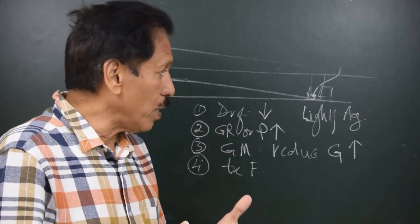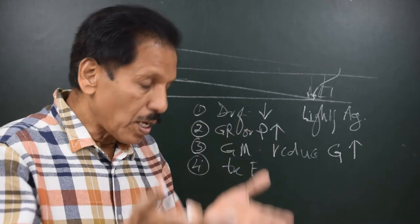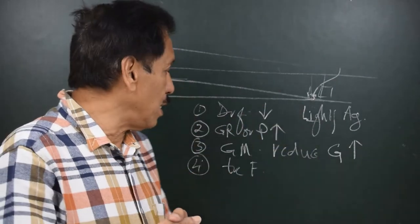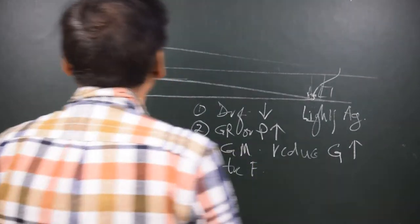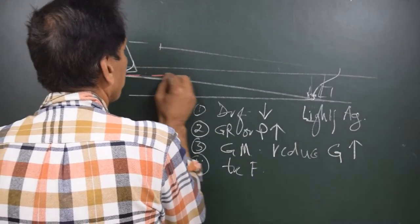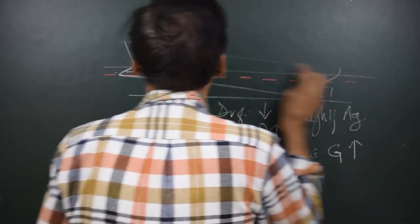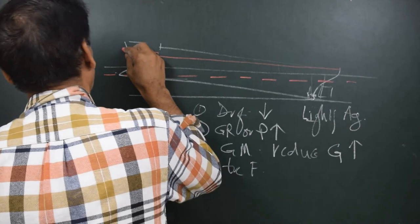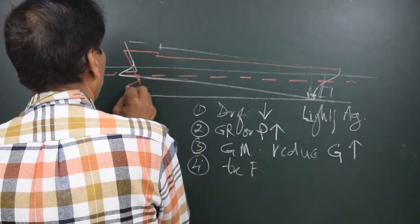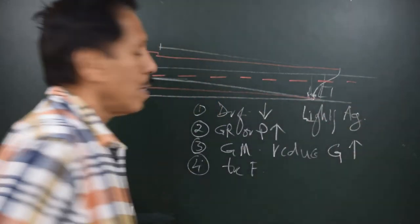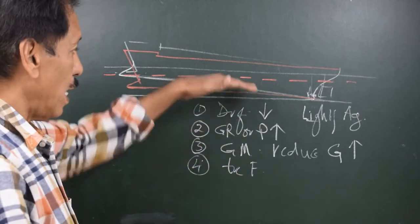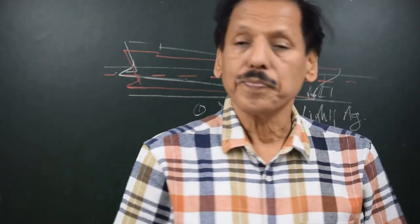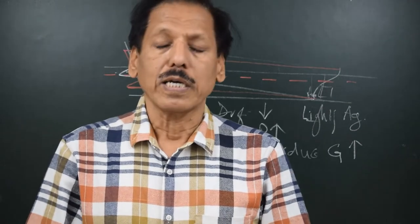Everything that happens by discharging a weight from a position — everything that happens to the ship — will happen in case of grounding. So in case of grounding, as the tide falls, you will see the draft decreases, the trim changes forward, the ground reaction increases, the virtual rise of G is seen, and the GM reduces. Let us say after some time this is the water level — this is the new position of the ship shown in red and the new waterline. Let us try to understand how to find out at what draft the ship will sit all over, because this principle is also used in dry docking.